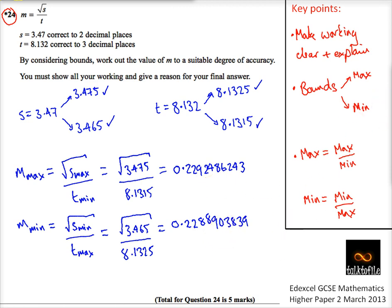Okay, but this is worth 5 marks. So for the final statement, it says work out a value of m to a suitable degree of accuracy. You must show all your working and give a reason. So I'm going to take m to be 0.229, 3 decimal places.